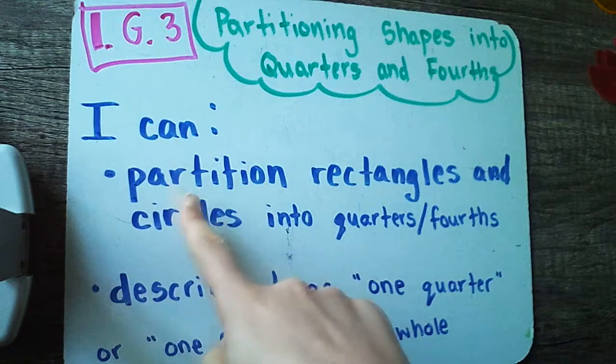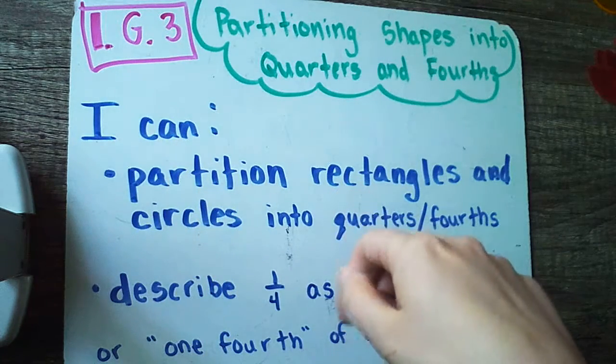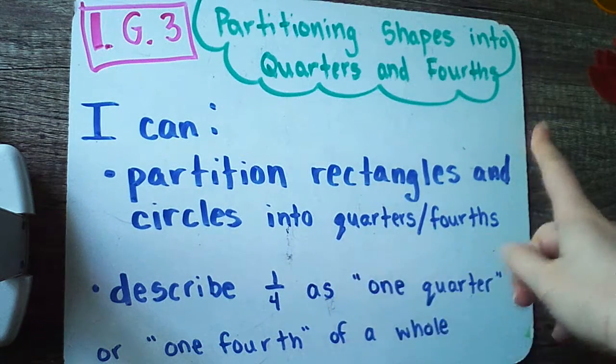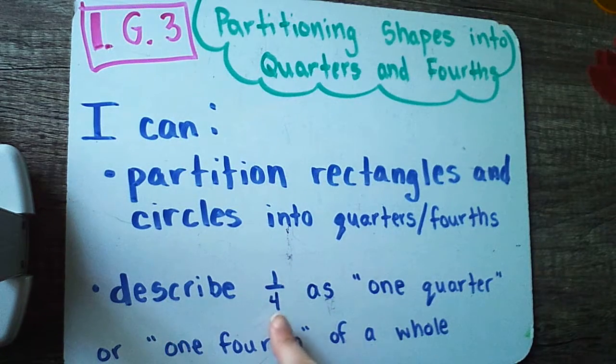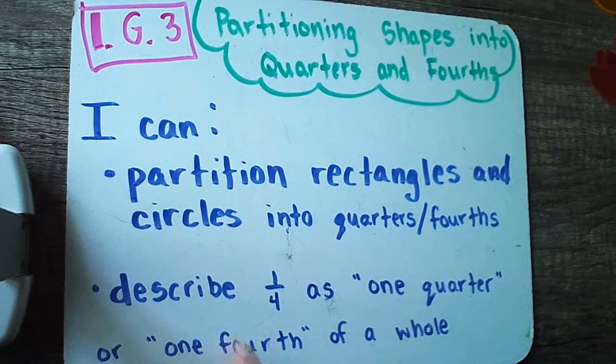Here's our I can statement: I can partition rectangles, keeping in mind that squares are also rectangles, and circles into quarters and fourths, and I can describe one-fourth as one-quarter or one-fourth of a whole.